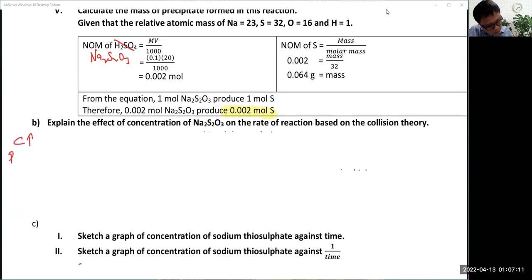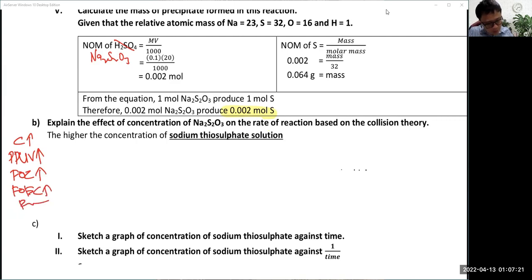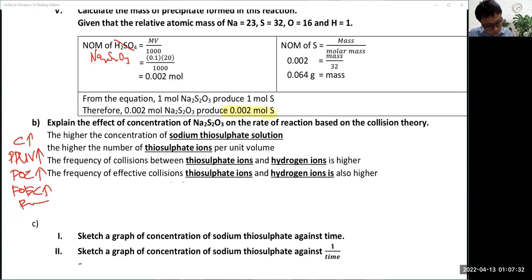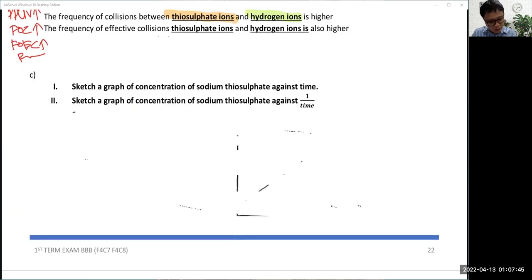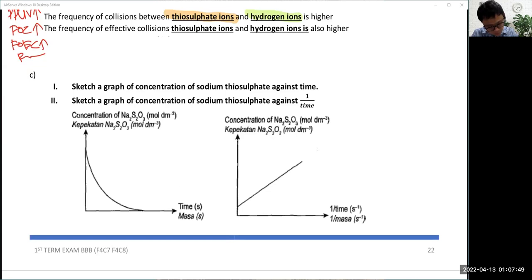After that, the effect of concentration: higher concentration, particle per unit volume increase, frequency of collision increase, frequency of effective collision increase, rate of reaction increase. You can mention thiosulfate ion higher concentration, then more thiosulfate ion per unit volume, frequency of collision between thiosulfate ion and hydrogen ion is higher. Sketch a graph: one is inverse proportional, one is direct proportional.